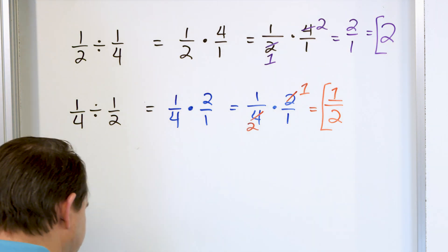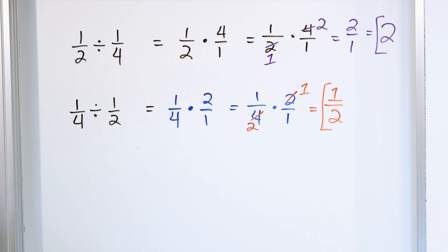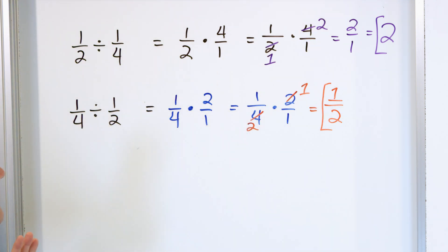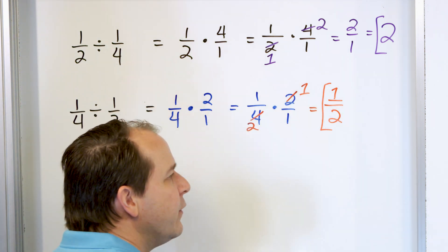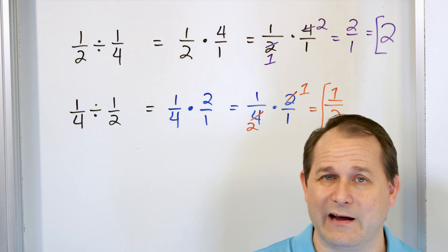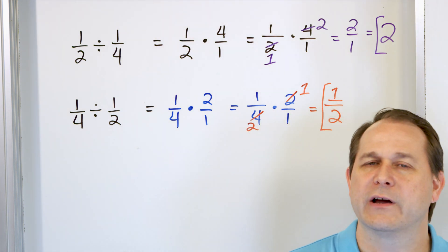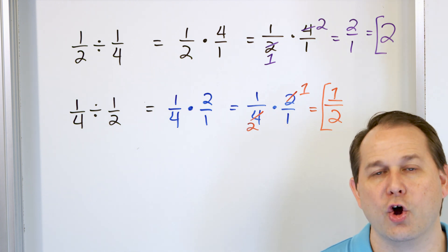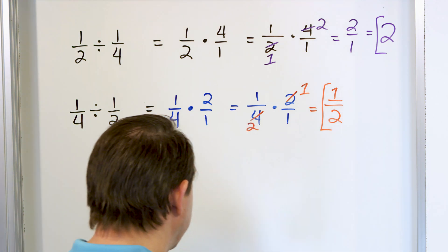No matter how it works out with pictures, mathematically we handle it the same way. We always turn the division into multiplication and flip the second fraction over. Then we try to cross-cancel ahead of time to get the final answer. If you didn't cross-cancel, you could just multiply: one times two is two, four times one is four — you get two-fourths, and you simplify to one-half. It's like making soup: you can add salt and pepper before cooking or after. Either way, you get the same result. Whether you pre-simplify or simplify after, you reach the same answer.